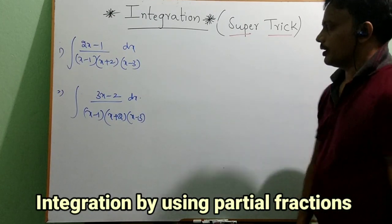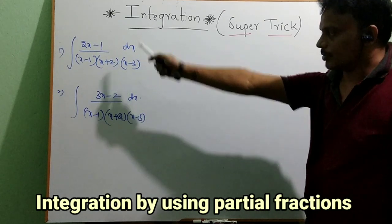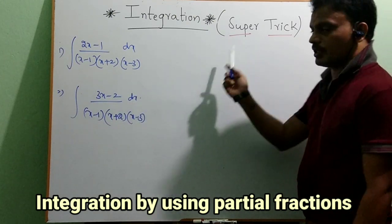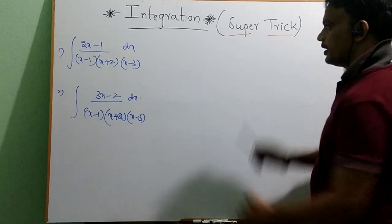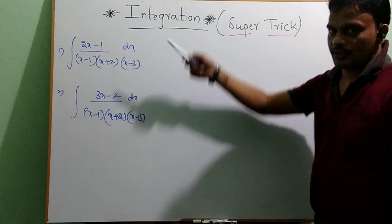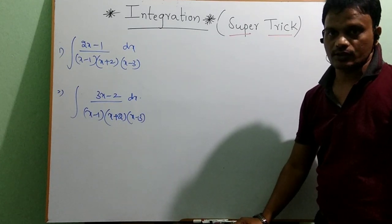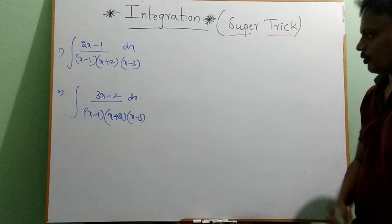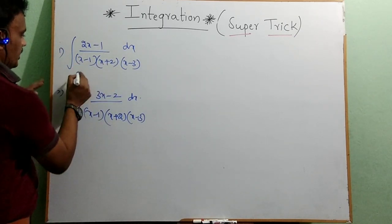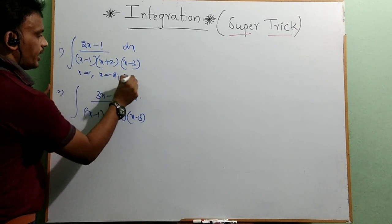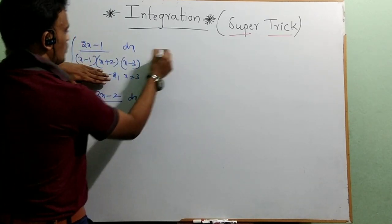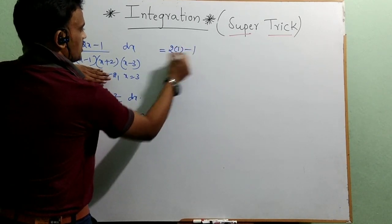Next model: integration using partial fractions. The traditional method decomposes the fraction into A/(x−1) + B/(x+2) + C/(x−3), finds A, B, C, then integrates each term — this takes time. The shortcut uses the roots of the denominator: x = 1, x = −2, and x = 3.